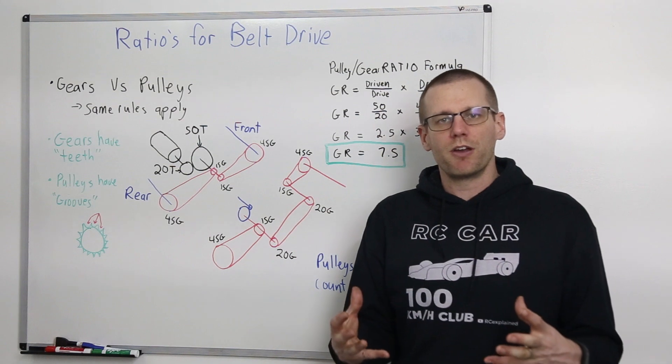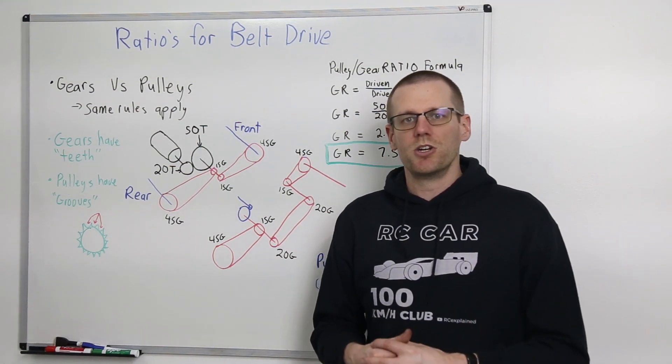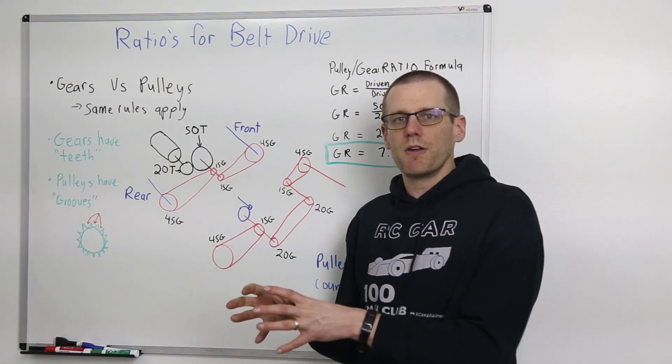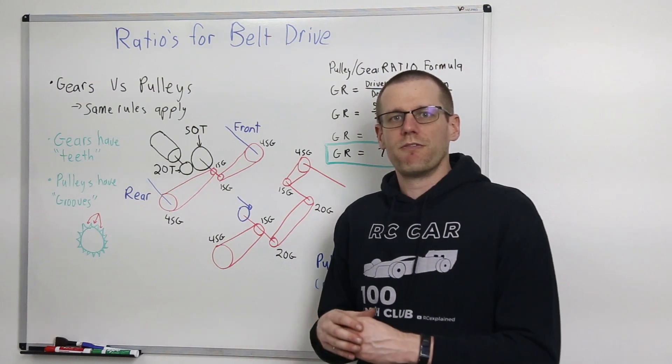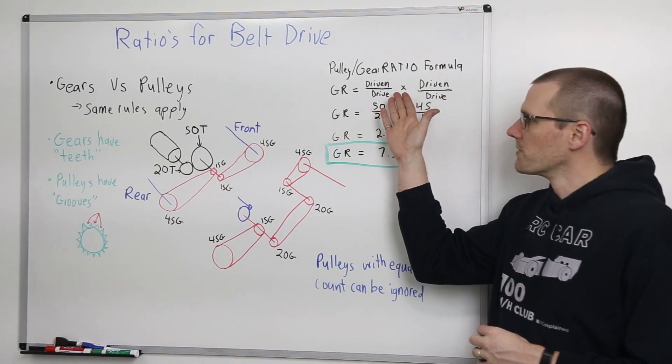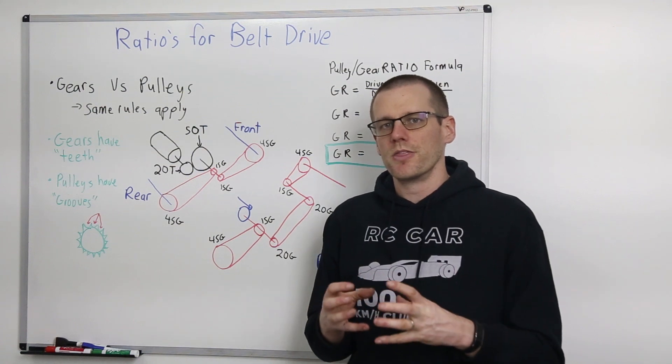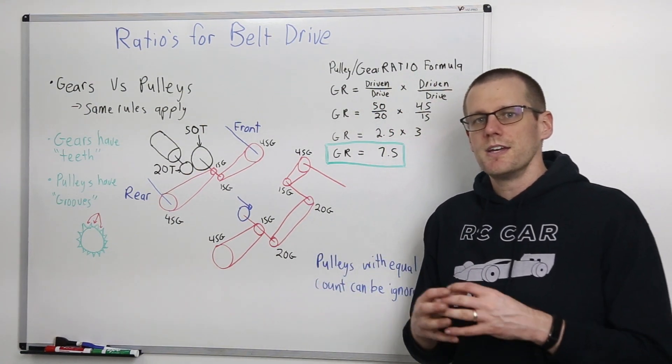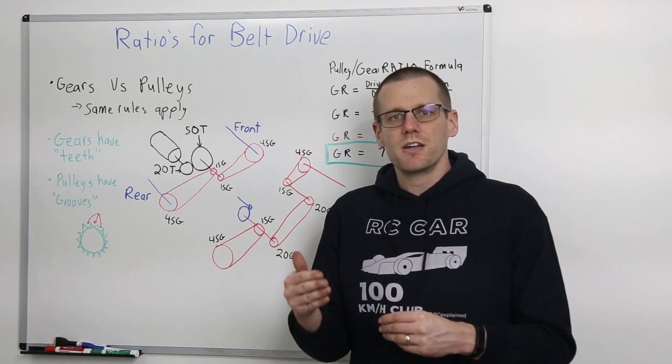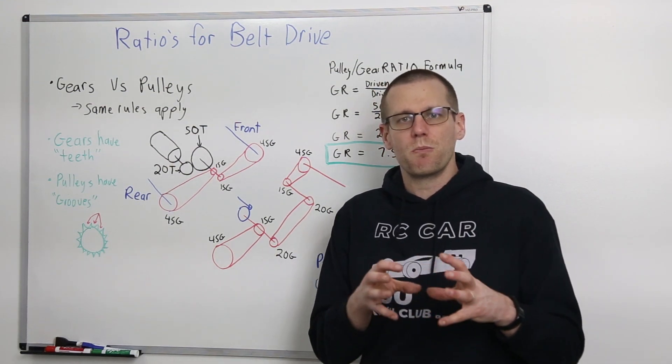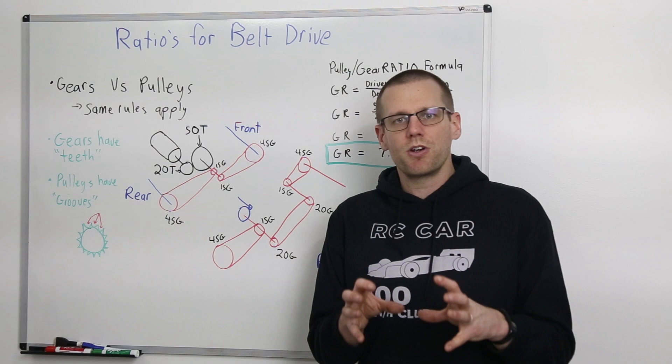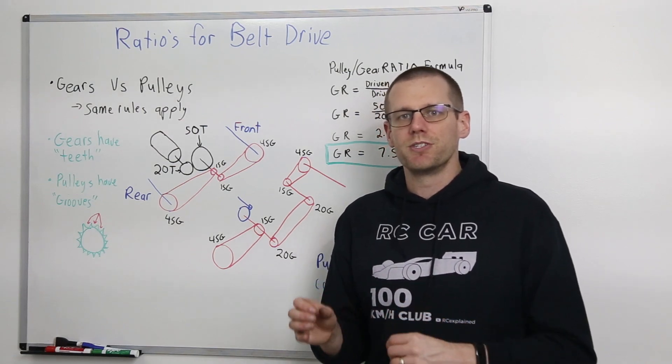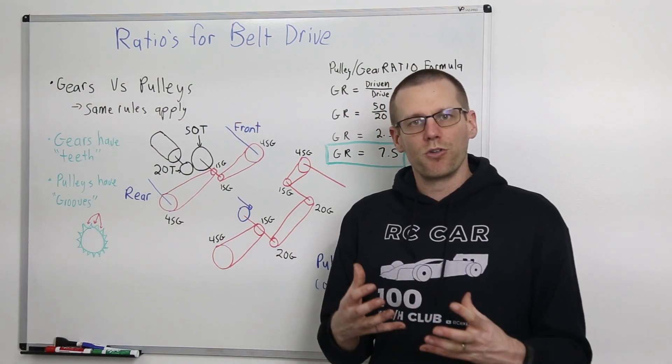We know that the formula for figuring out the ratio is going to be your driven pulley or driven gear divided by your drive gear, as we'll see very soon here up on the board. Other rules that you also want to consider is how you actually are able to neglect certain components, certain pulleys or gears. Those are also going to apply for the system that we're working through today.